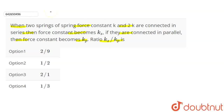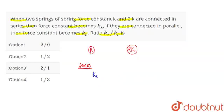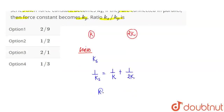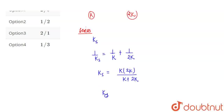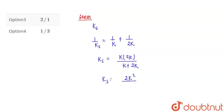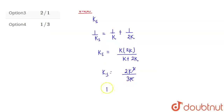We have to calculate the ratio of Ks upon Kp. We have two springs with constants K and 2K. When connected in series, the equivalent spring constant Ks is given by 1/Ks = 1/K + 1/2K. Solving this gives Ks = K × 2K divided by (K + 2K), which equals 2K divided by 3K, so Ks = 2K/3.